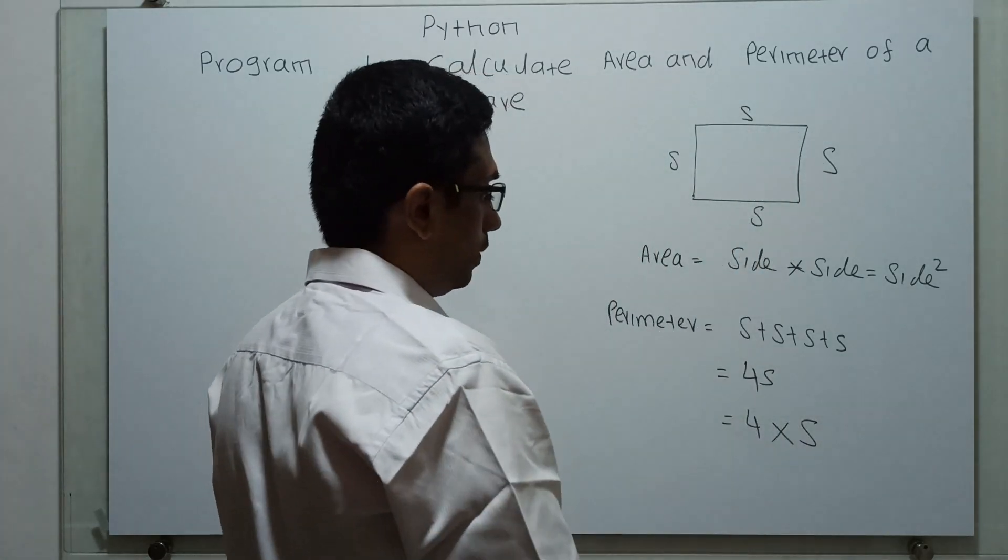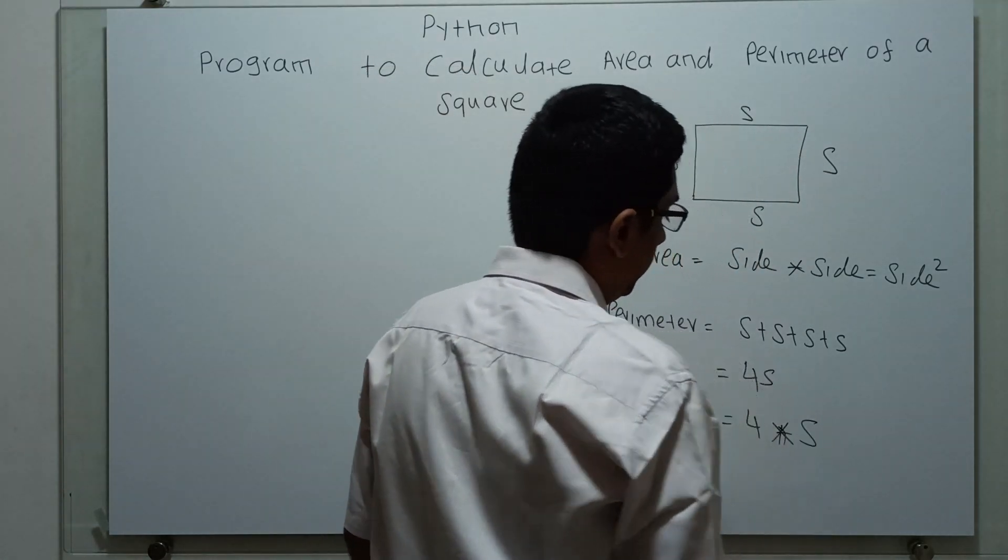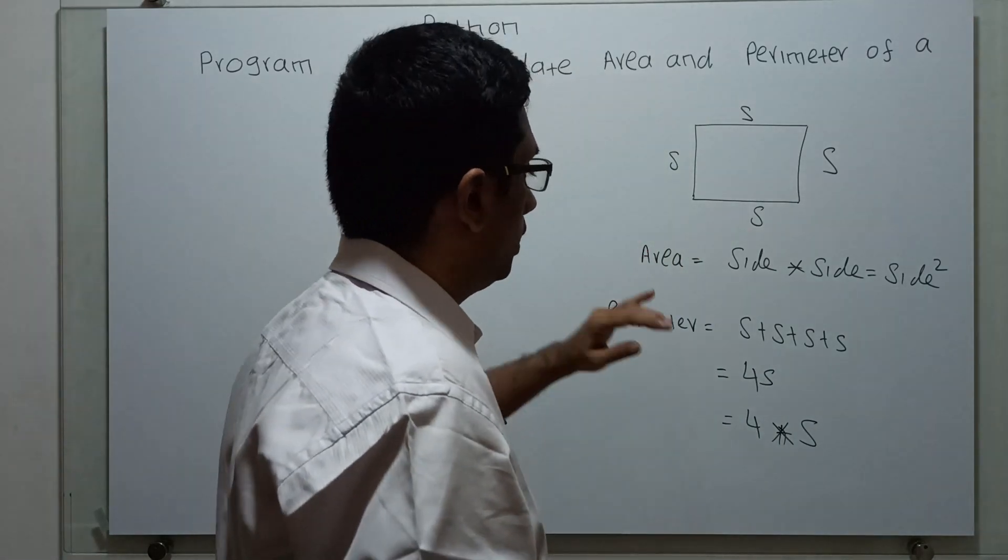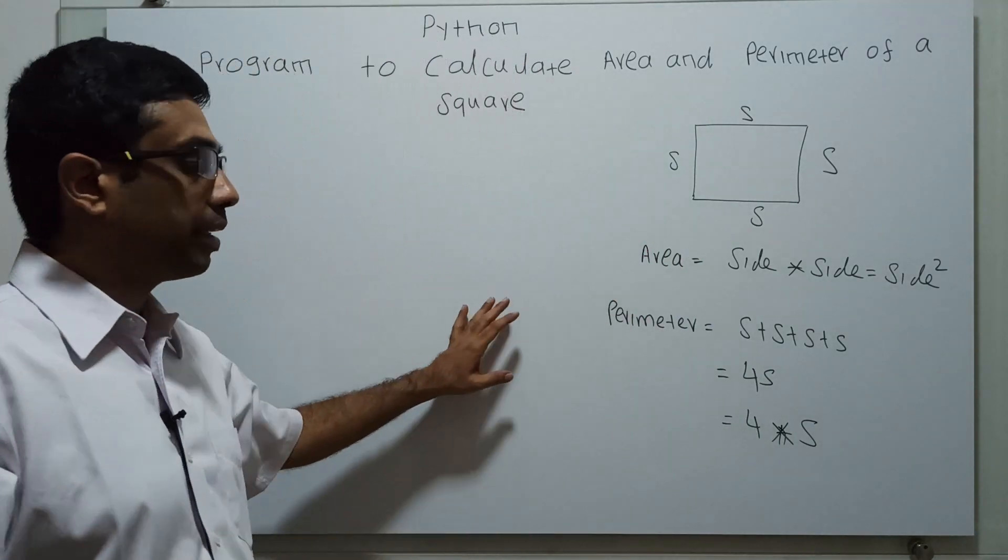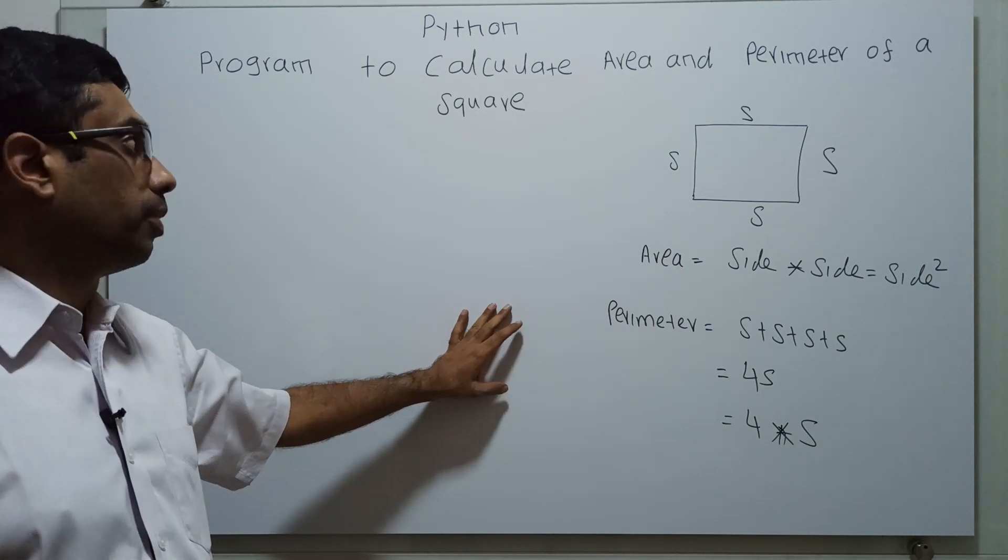So this is the way to calculate the area and perimeter. For this, we are going to write a Python program.